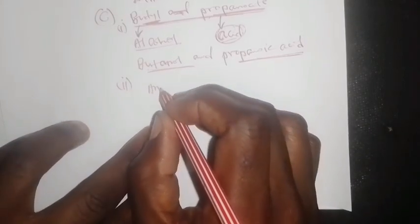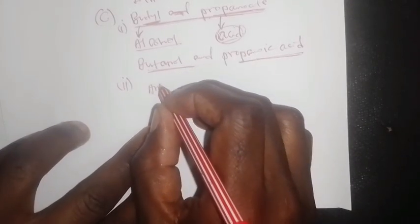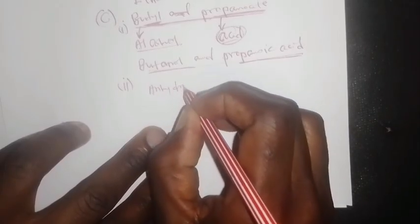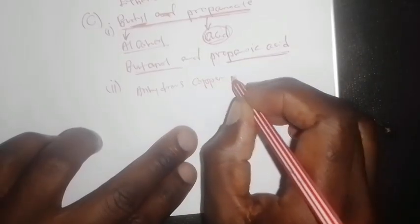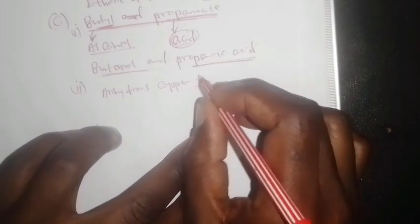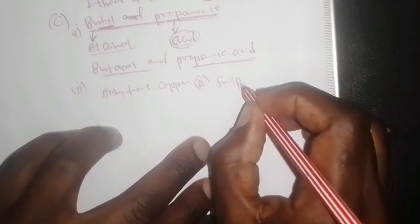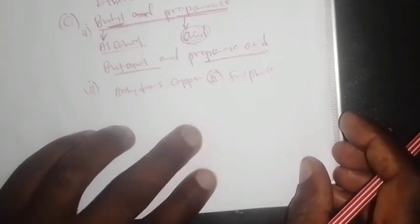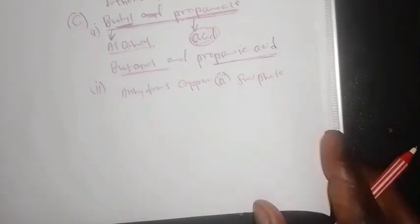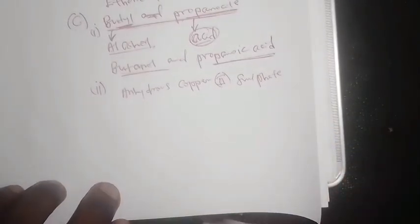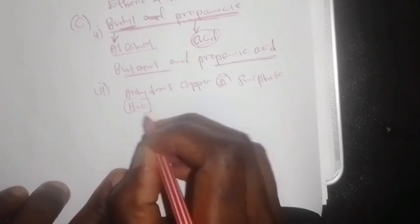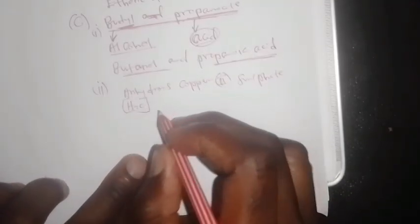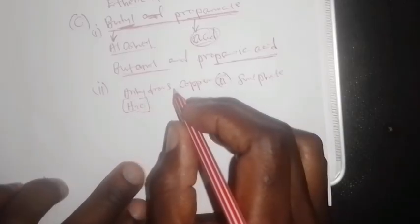You get anhydrous copper sulfate. One of the byproducts of esterification is that they produce water. Once they produce water, you use this anhydrous copper sulfate. So the test is by adding anhydrous copper sulfate to the water produced.